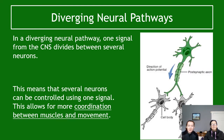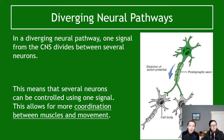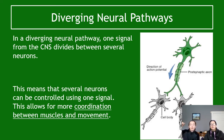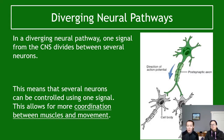Diverging neural pathways do what the name suggests — signals go apart. Instead of two or more neurons coming together, the signal goes from one neuron to two or more. In the diagram, the green neuron's signal is passed on to two different gray neurons. The important thing to know is that several neurons can be controlled using one signal, and this allows for more coordination between muscles and movement.